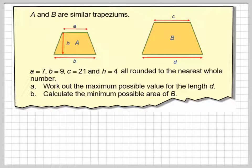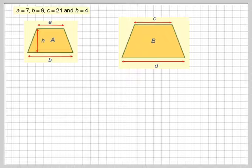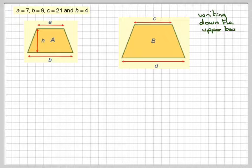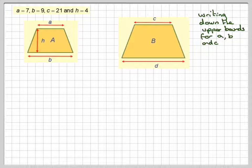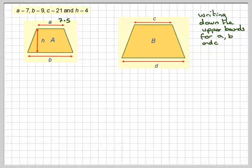If we do the first one, first of all, we label the sides and write down the upper bound for each of A, B, and C. So the upper bound of A will be 7.5.